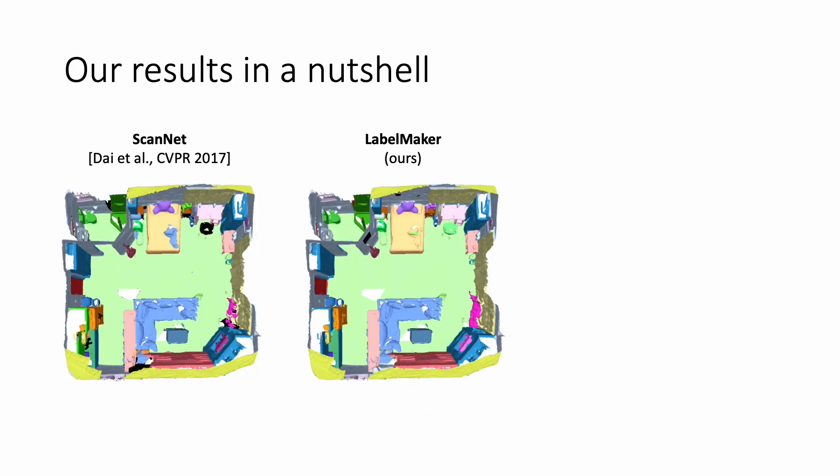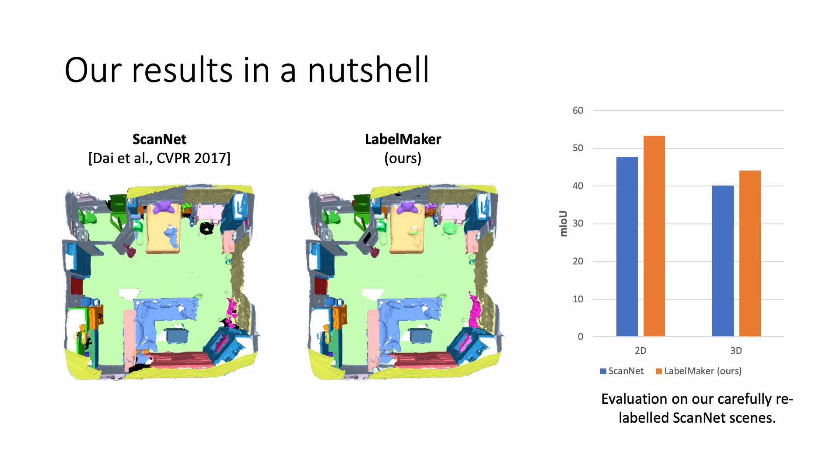Here we show our generated labels side by side with existing human annotated labels provided by ScanNet. If human annotations already exist, LabelMaker can improve their quality. This can be helpful to resolve ambiguities or errors in the human annotations, as these are usually imperfect.